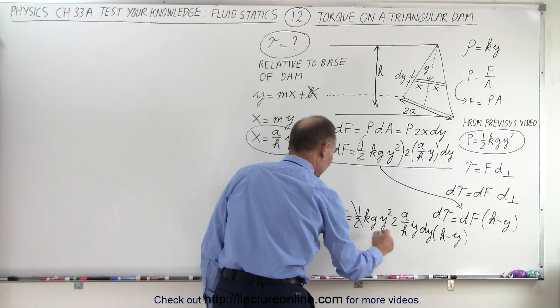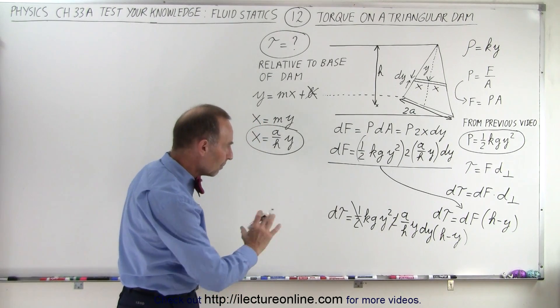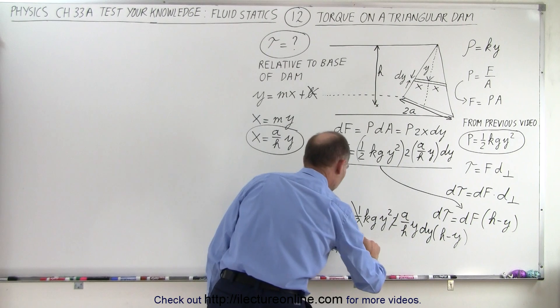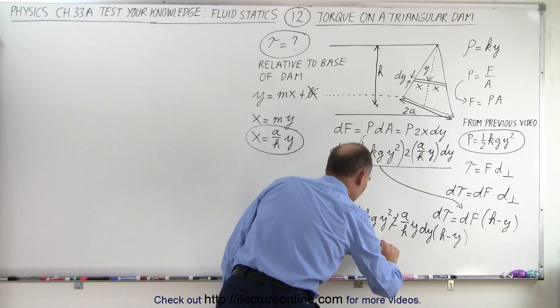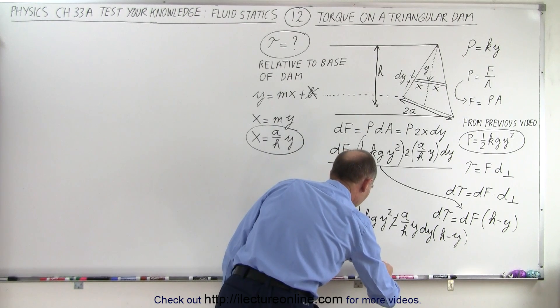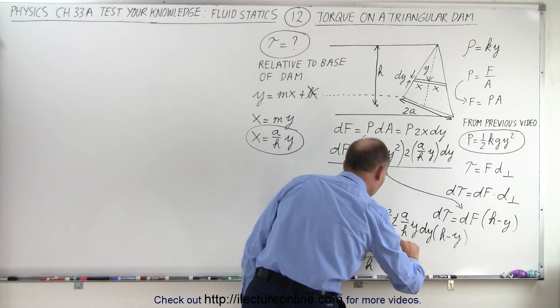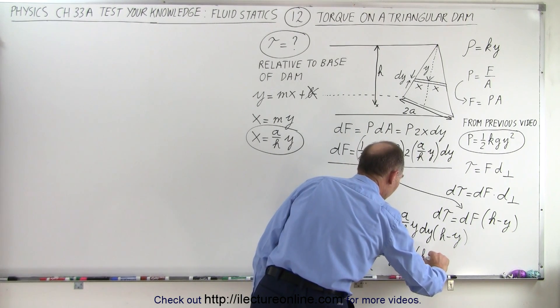So let's go ahead. This one half cancels out this 2 right there. And then we can combine the y's. So we can say that the torque is equal to Kg A over H times y squared times y would be y cubed dy times H minus y.